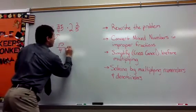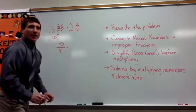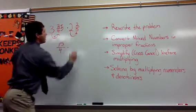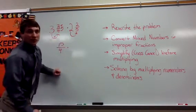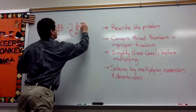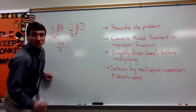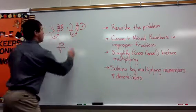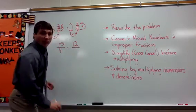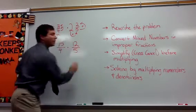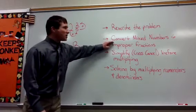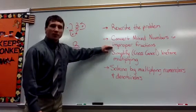Now we're going to write our other number as an improper fraction. Two times five is ten, plus two more is twelve, and we keep the denominator the same — five parts. So that gives us twelve-fifths. Step number two was to convert mixed numbers to improper fractions.